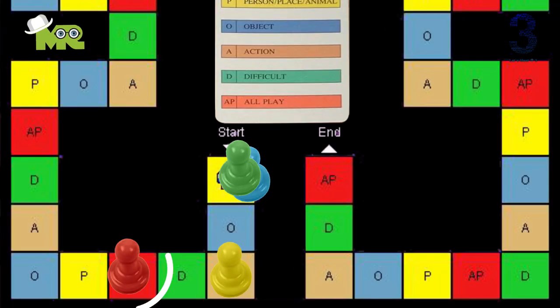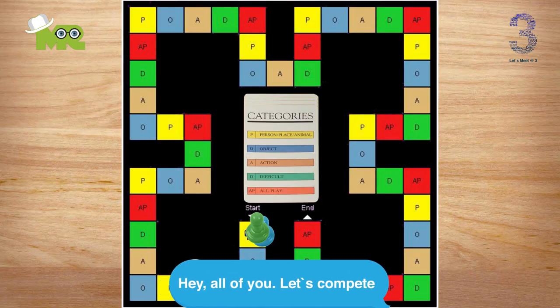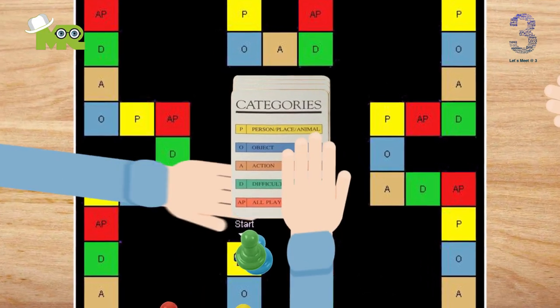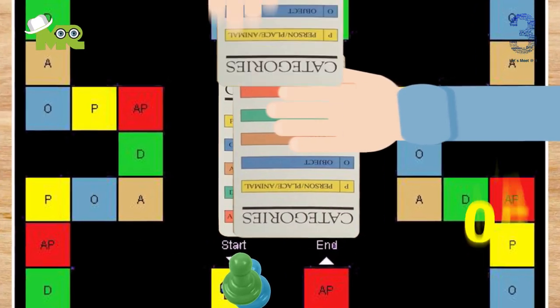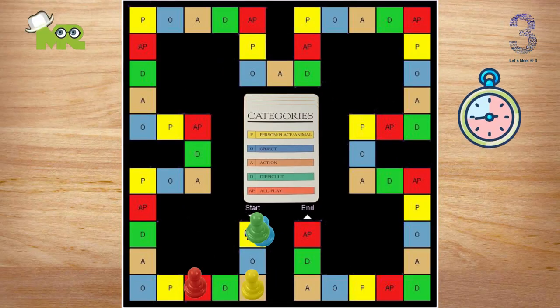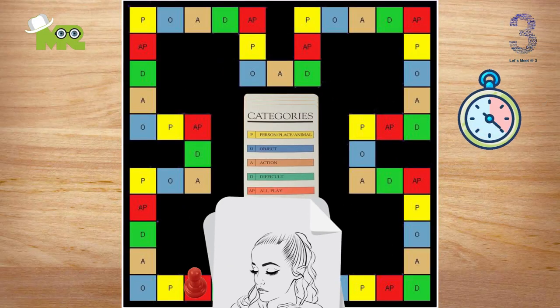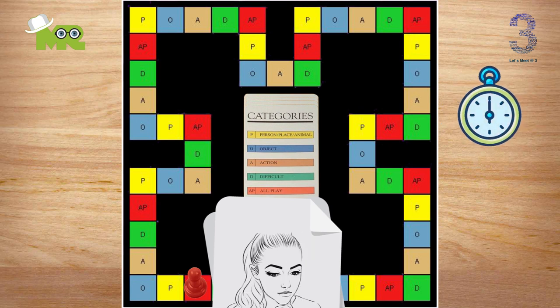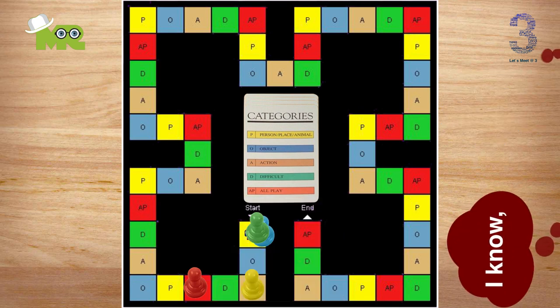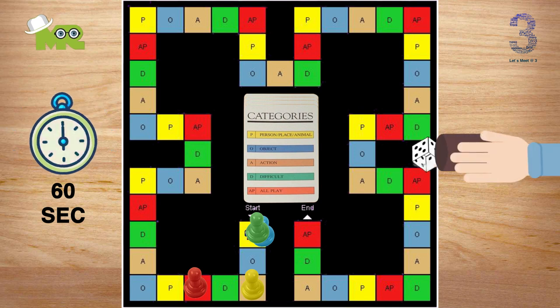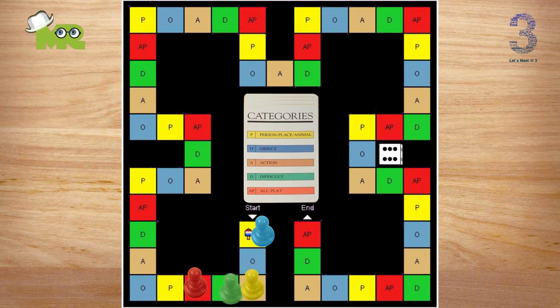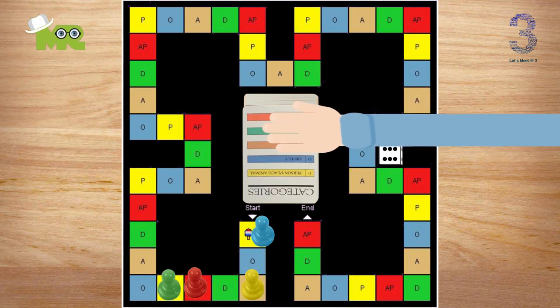If you land on an all-play square, or the word on the card has a triangle symbol next to it, then all of the teams get to compete. The picturists for each team get to look at the word card for five seconds. Then start the timer and have the picturists from each team draw clues for their teammates. The team that guesses the word before the timer runs out gets to roll the die, move the spaces indicated by the die roll, and pick a new word card.